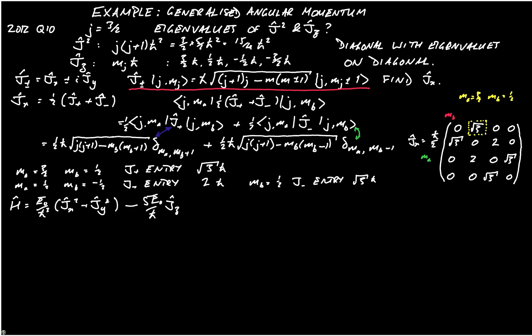So this is a Hamiltonian, and we're asked to explain why it's diagonal. Well, it's diagonal because we can write jx squared plus jy squared is equal to j squared minus jz squared. That's a simple vector definition. j squared is equal to jx squared plus jy squared plus jz squared. And both j squared and jz squared are diagonal. So therefore the Hamiltonian is going to be diagonal.